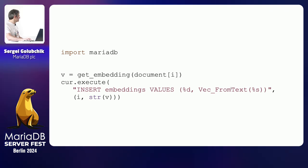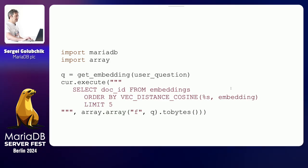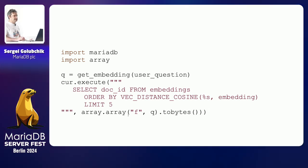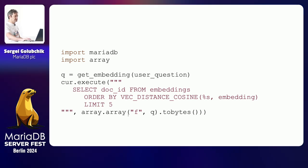After you populate the database with vectors, you search with them using a very SQL-like approach. You need five closest vectors, so you just ORDER BY distance and LIMIT 5. This is pretty much intuitive SQL to find the five closest vectors — there's no special syntax for that.